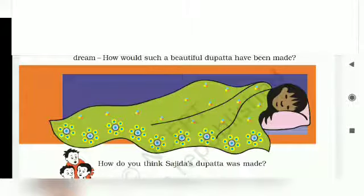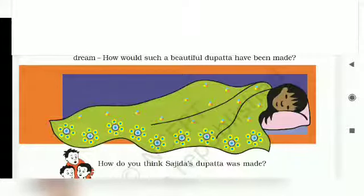Toh yeh Sajda ki jo story hai, isme kya hai? Hum parhenge bohut type ki jo kapre hote hai, different type ki jo kapre hote hai, uspe jo work hote hai, kaisi tayyaar hote hai, design jo hote hai, color jo hote hai. Next class mein hum log parhenge weaving paper. That's all for today. God bless you.